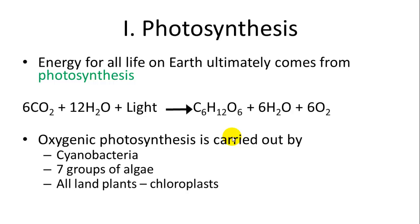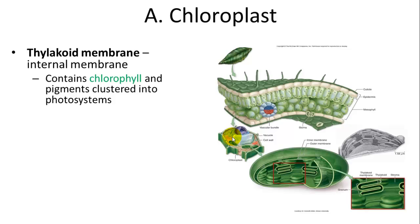The type using oxygen is carried out by cyanobacteria, algae, and all land plants. Land plants have a specific organelle called a chloroplast. The chloroplast has an internal membrane called the thylakoid membrane.